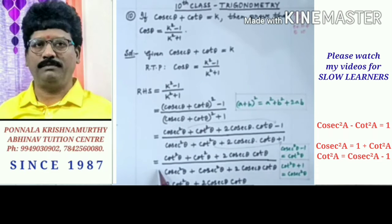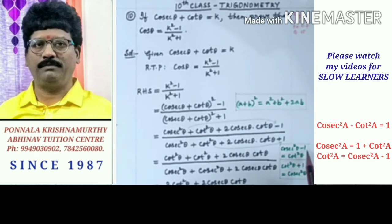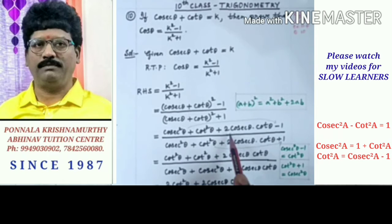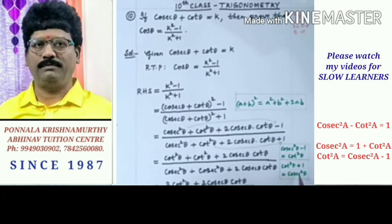In the numerator, we have cosec²theta minus 1, and since cosec²theta minus 1 equals cot²theta, we write cot²theta in place of cosec²theta minus 1. So the numerator becomes cot²theta plus 2 cosec theta cot theta plus cot²theta. In the denominator, cot²theta plus 1 equals cosec²theta, so we write cosec²theta plus 2 cosec theta cot theta.